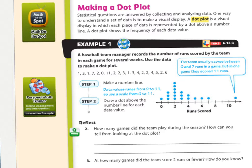A baseball team manager records the number of runs scored by the team in each game for several weeks. Use the data to make a dot plot. So you start with a number line and that's what they have here. Notice we're counting by twos, but they're labeling every other mark. Each mark represents one unit.